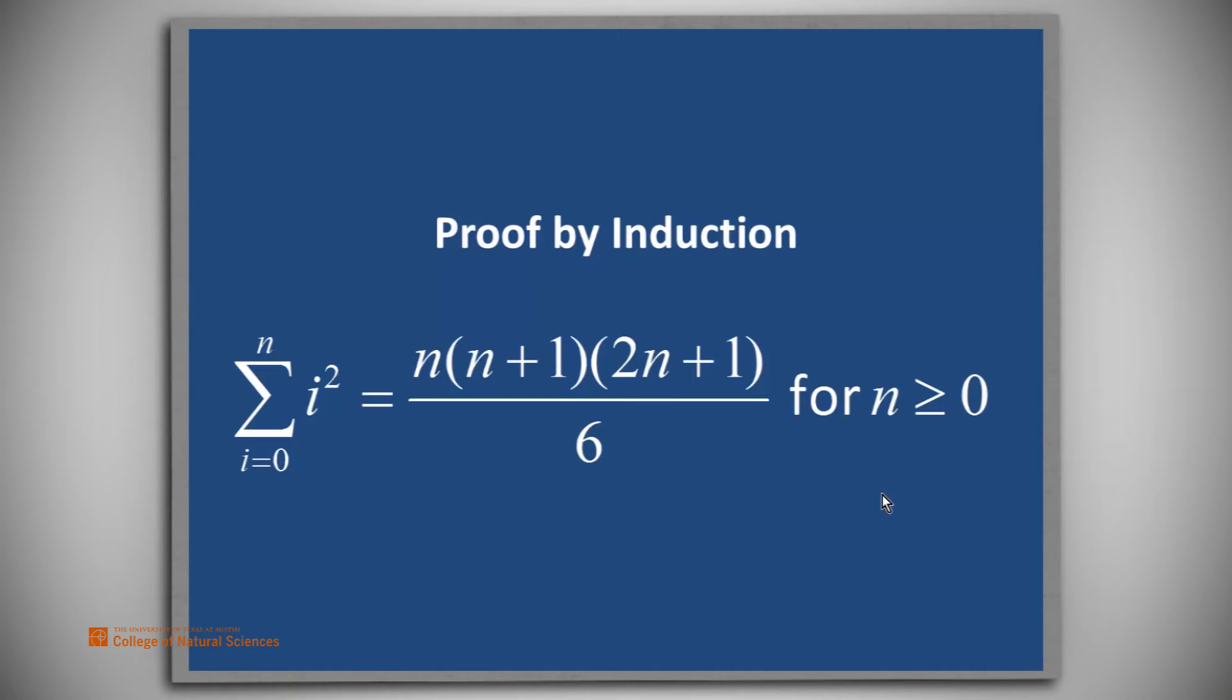equal to n times the quantity (n+1) times the quantity (2n+1) divided by 6 for integer values of n greater than or equal to 0.